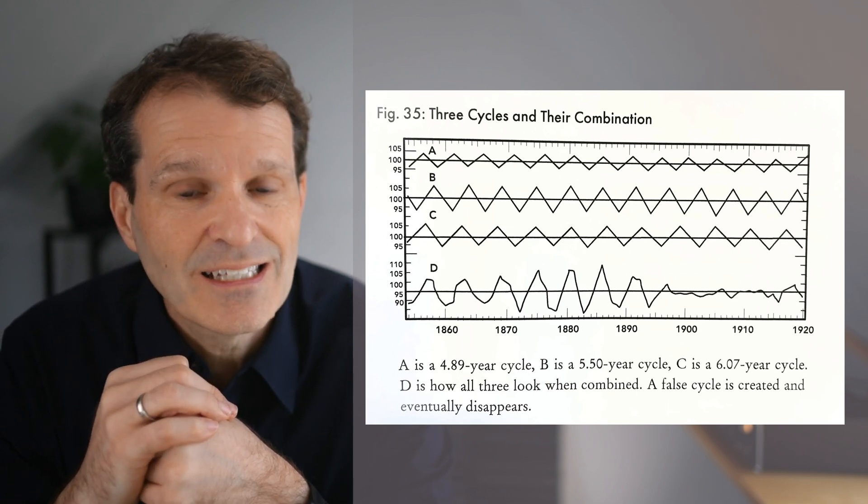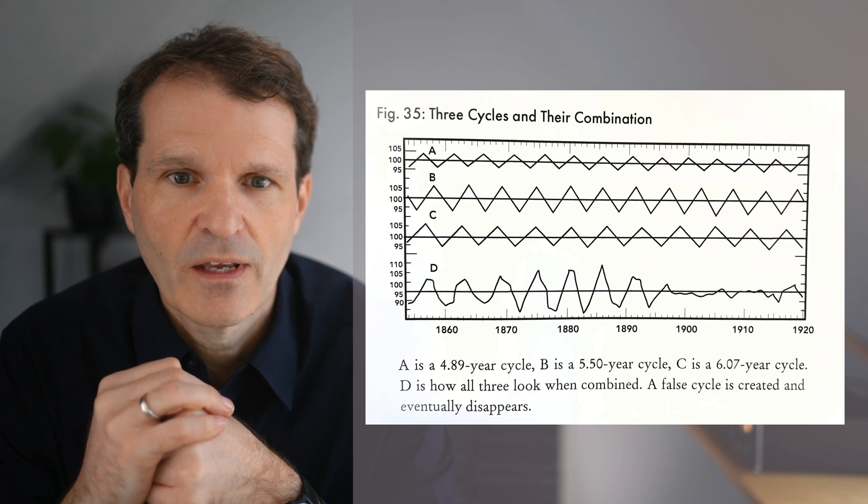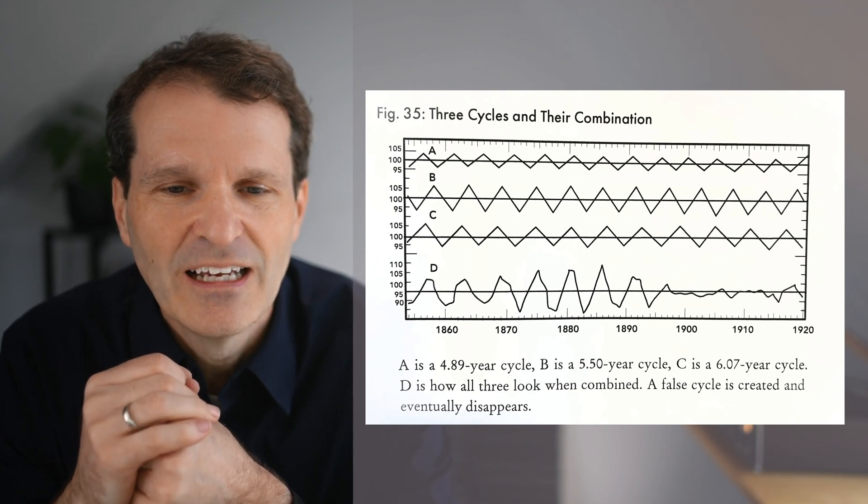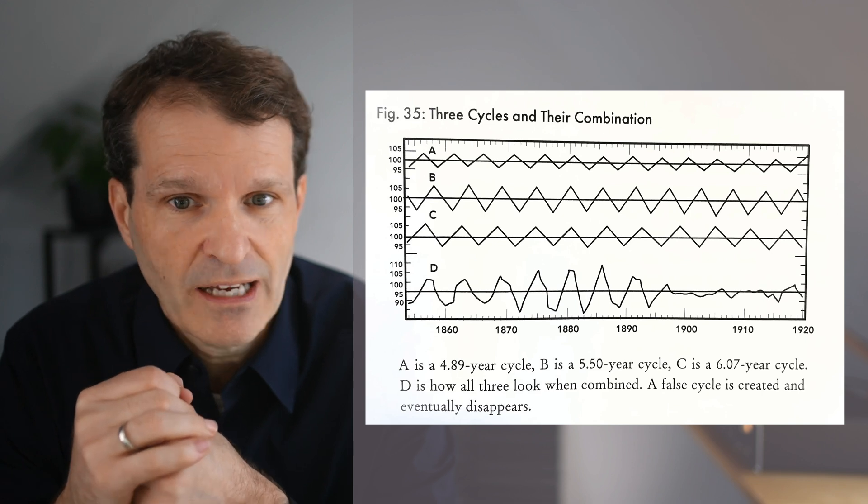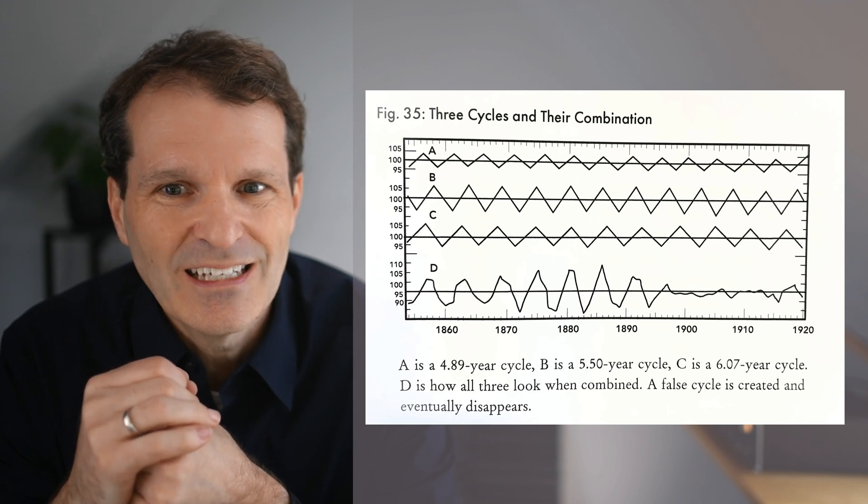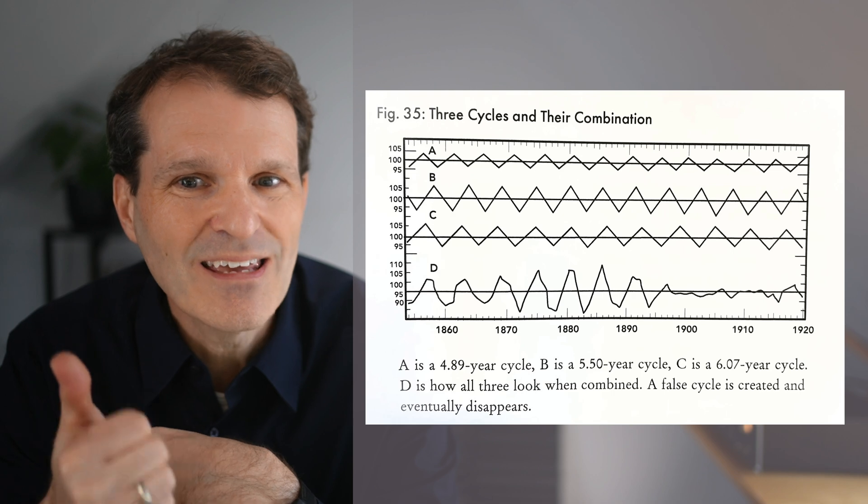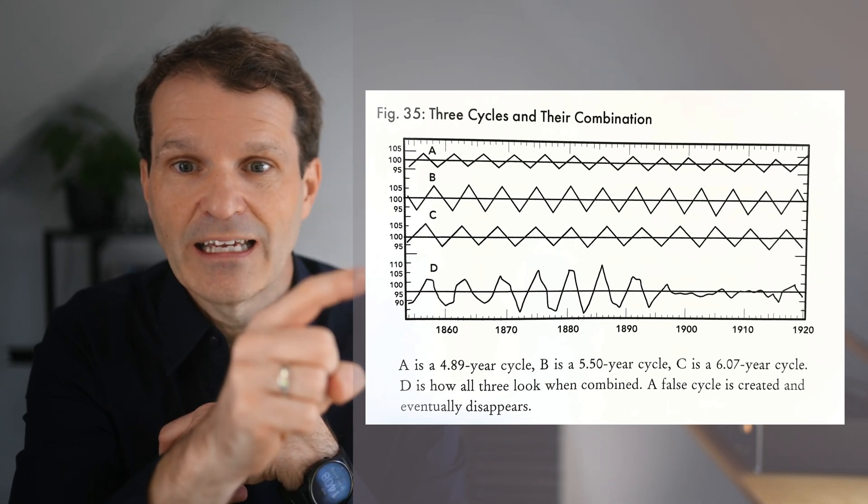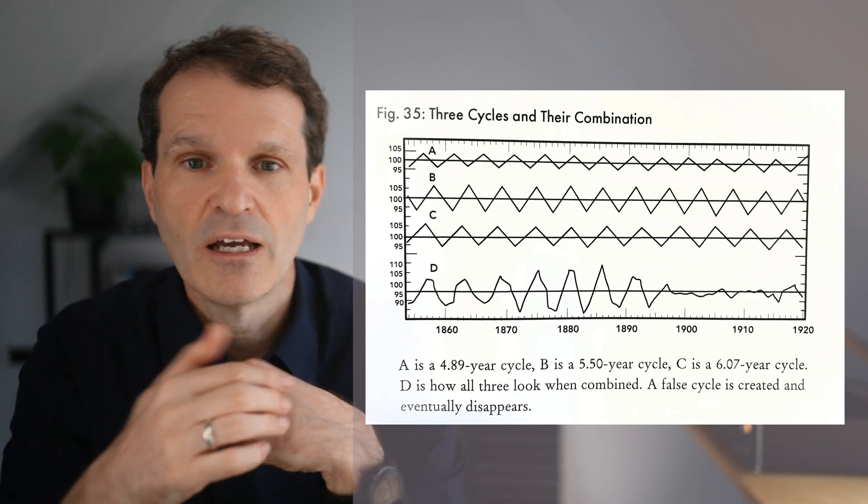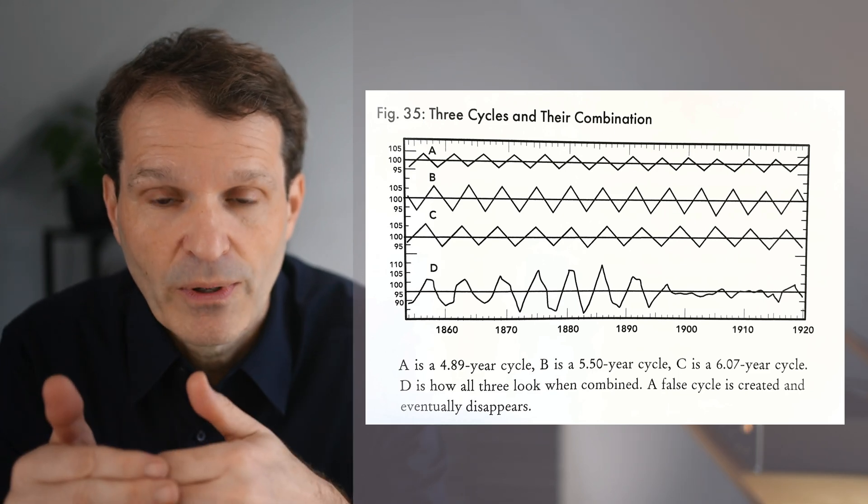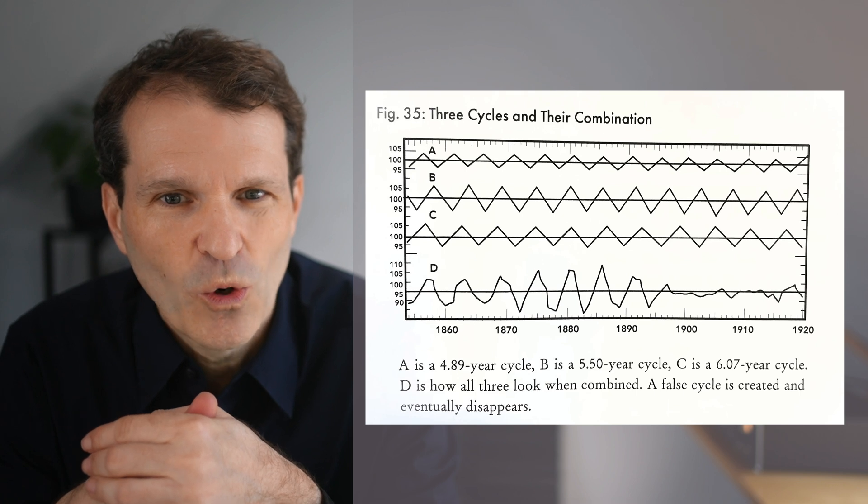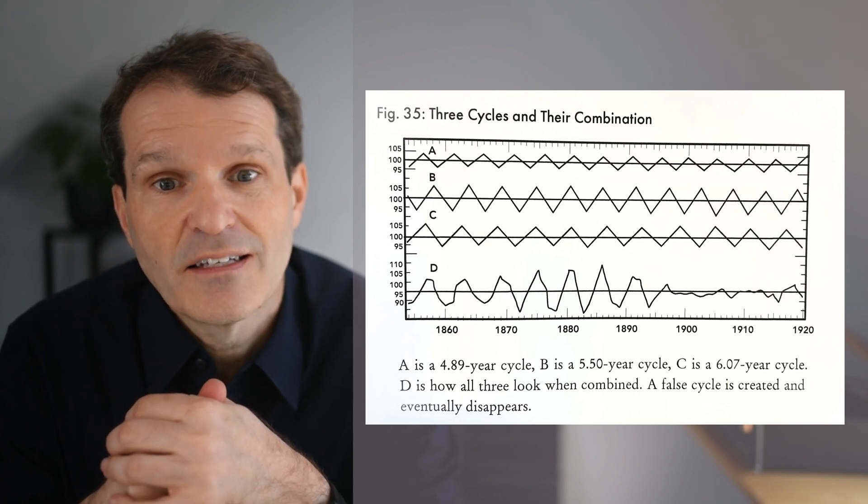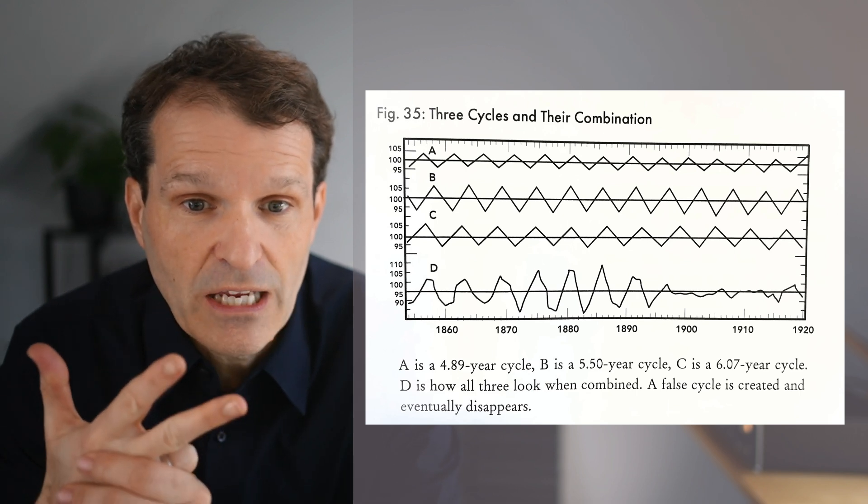A false cycle means it is a composite cycle which is made out of three cycles. So D is just the sum of the cycles A, B, and C. D is not one cycle; D is the sum of three real cycles.